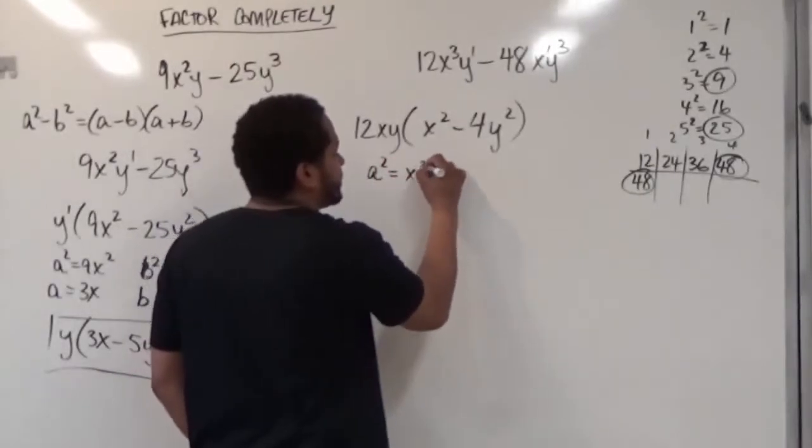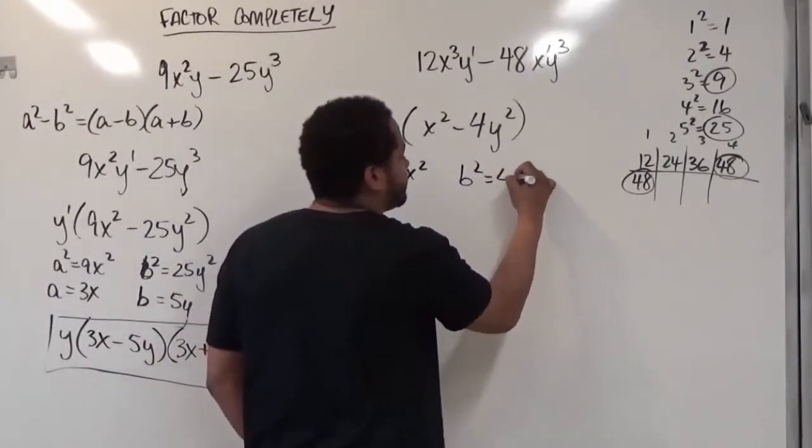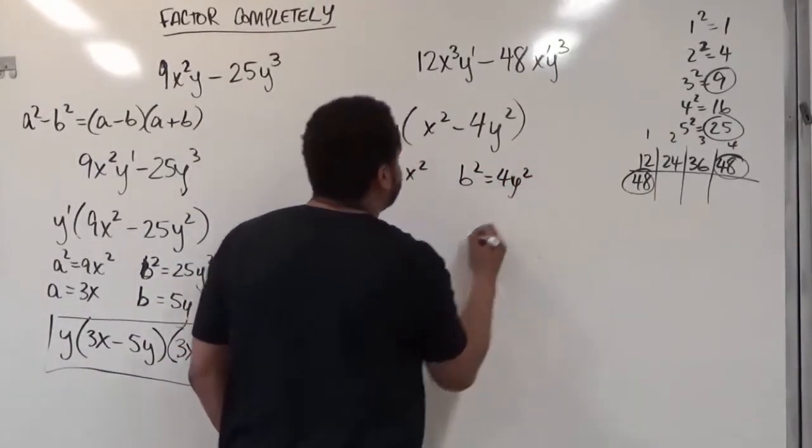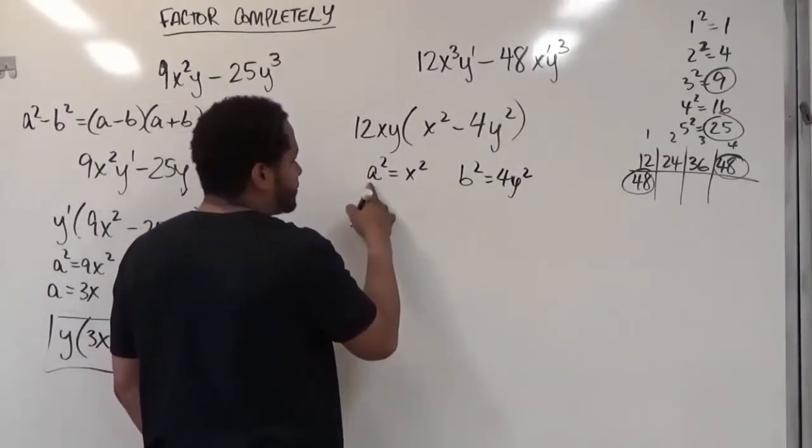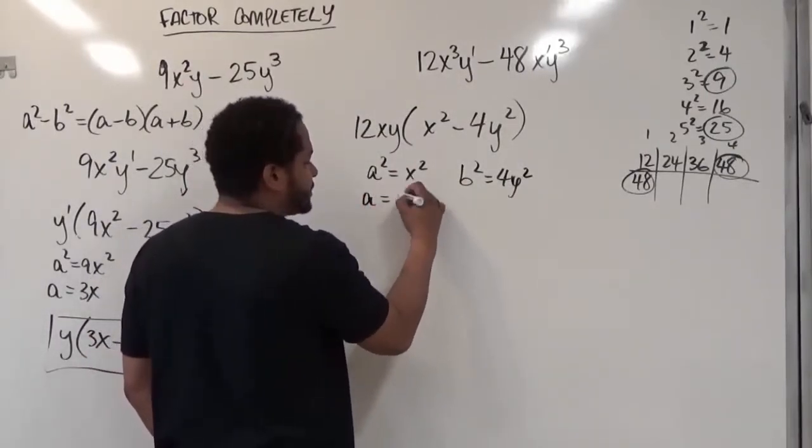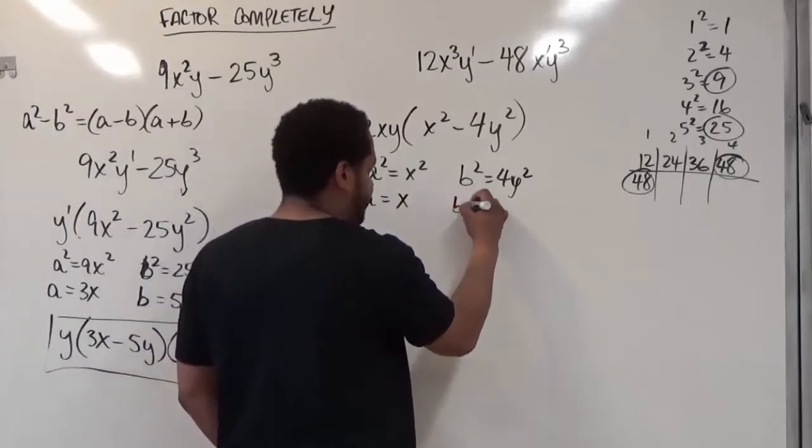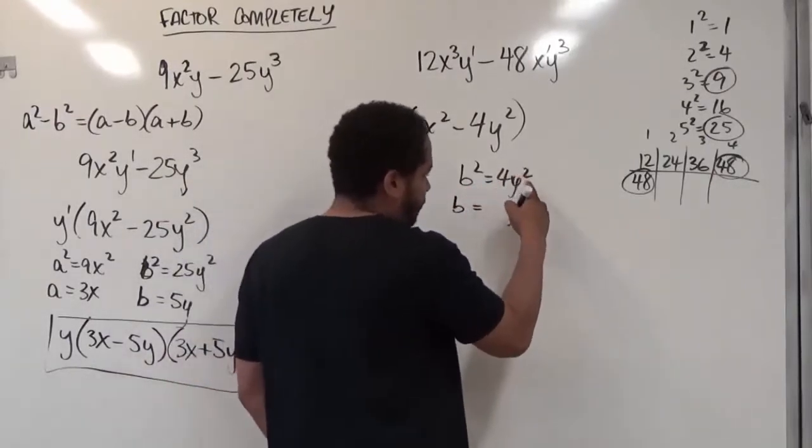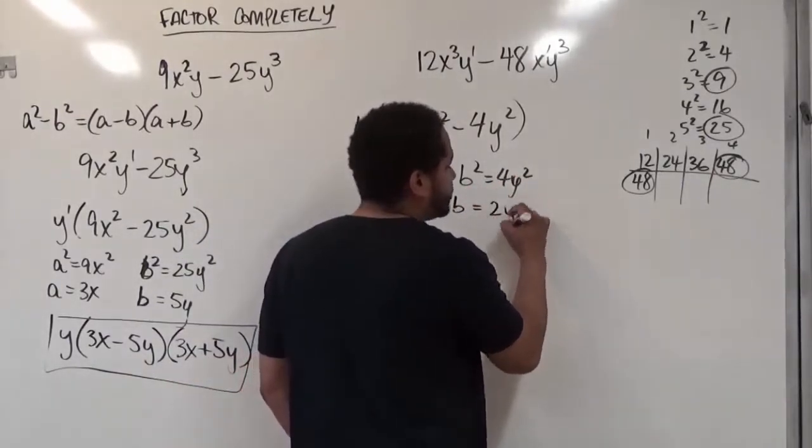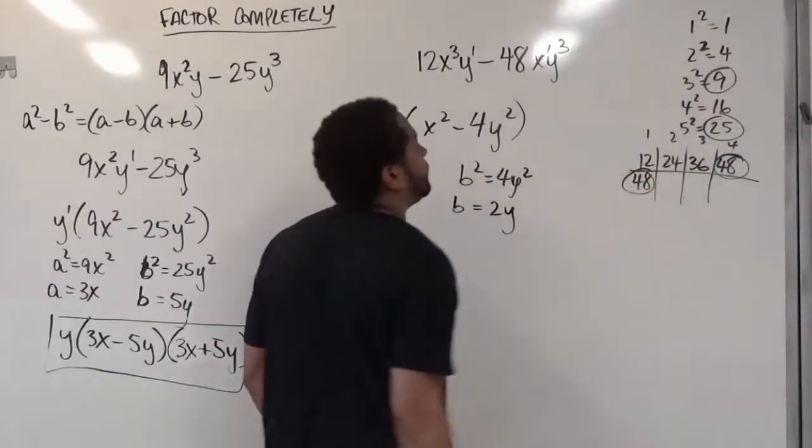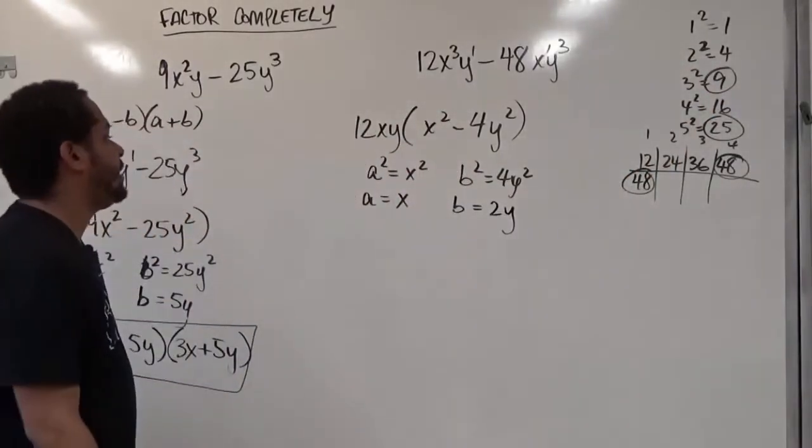My a squared term is just x squared, my b squared term is just 4y squared. The square root of a squared is a, the square root of x squared is x, the square root of b squared is b, the square root of 4y squared is 2y. We see that right here, where we see the perfect square of 4.